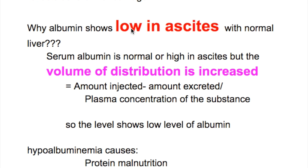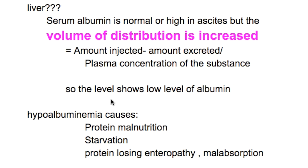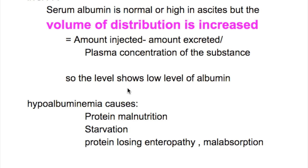Why does albumin appear low in ascites with a normal liver? Serum albumin is normal or high in ascites, but the volume of distribution is increased. Volume of distribution is the amount injected at present minus the amount excreted, divided by the plasma concentration of the substance. So the level shows a low level of albumin in ascites.